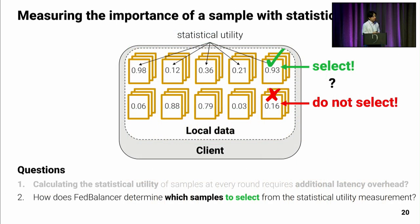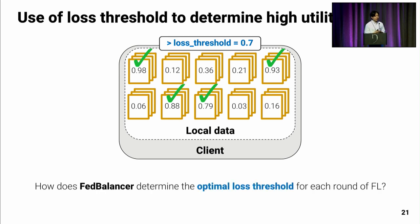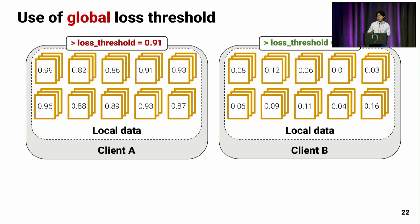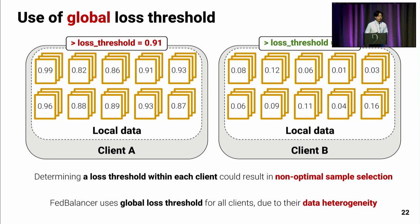FedBalancer uses a loss threshold to determine high-utility samples — for example, samples with utility values above 0.7 are considered high utility. We use a global loss threshold, not a local one determined per client, because determining thresholds within each client could result in non-optimal samples given that all client data are very heterogeneous. On some clients, actually important samples could be incorrectly labeled as non-important and vice versa. So FedBalancer uses a global loss threshold for all clients due to data heterogeneity.